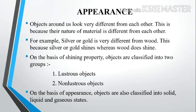Now, the first property, that is appearance. Students, the objects around us look very different from each other. This is because the nature of material is different from each other. For example, silver or gold is very different from wood — silver or gold shines whereas wood does not shine. On the basis of shining property, objects are classified into two groups: number one, lustrous objects; second, non-lustrous objects. On the basis of appearance, objects are also classified into solid, liquid, and gaseous states.